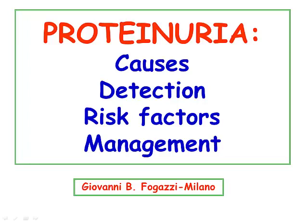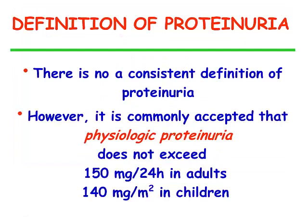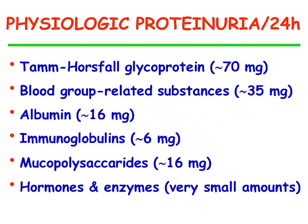There is no consistent definition of proteinuria. However, it is commonly accepted that physiologic proteinuria does not exceed 150 mg per 24 hours in adults and 140 mg per square meter of body surface in children. There is a physiologic proteinuria which contains mainly Tamm-Horsfall glycoprotein, which is produced by the thick distal ascending loop of Henle, and which also contains albumin, roughly on the average 16 mg per day, however less than 30 mg per day.